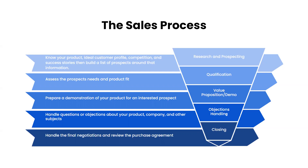Once you know your product is a good fit and they agree to a demo, that leads to the third stage: presenting your value proposition or giving the physical demo. This involves having all information from previous conversations readily available. The fourth stage is objections handling — dealing with questions around pricing or whether you're talking to the right person. The fifth and final stage is closing the deal — handling final negotiations, reviewing the purchase agreement, and sending documents for signature.